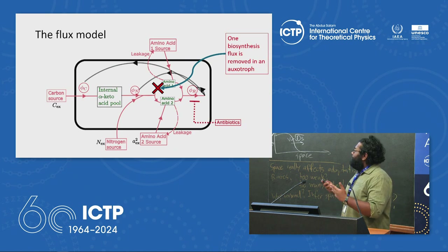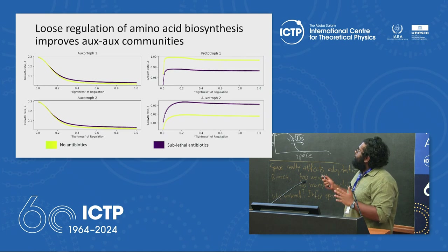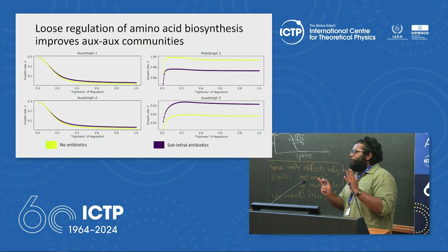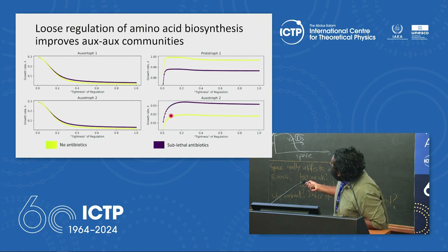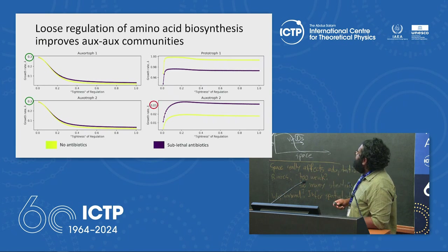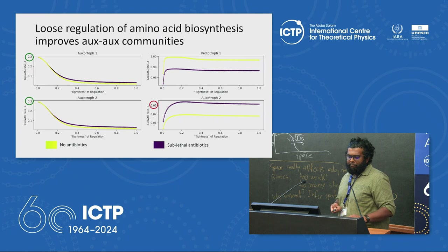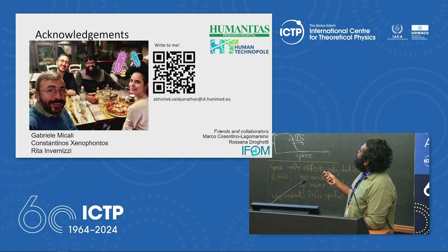I simulate this system and look at how fluxes and pools move. I can actually explain the phenomenon where an auxotroph-auxotroph system works better than a prototroph-auxotroph system if we make the regulatory switch a little bit inefficient and noisy. You can see that the growth of the auxotroph alongside the prototroph — normalized with respect to the prototroph — is much lower compared to the growth rates in an auxotroph-auxotroph system. This is still a work in progress and I still need to quantify it further.